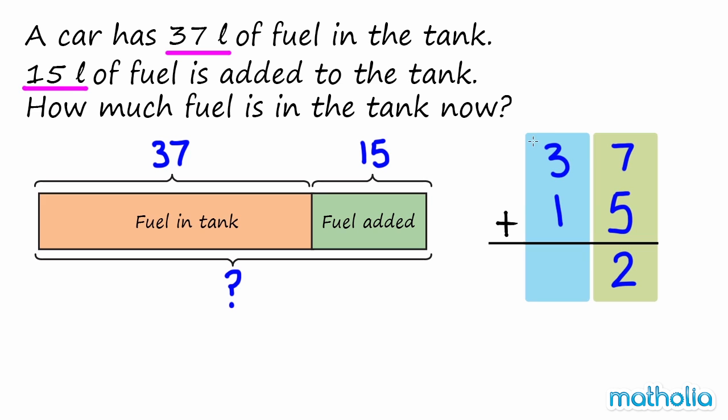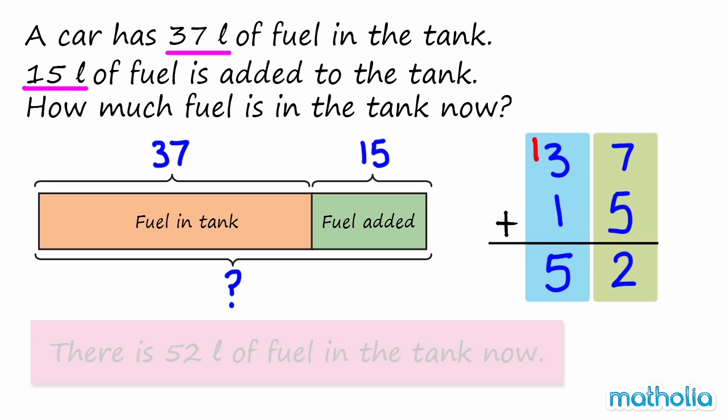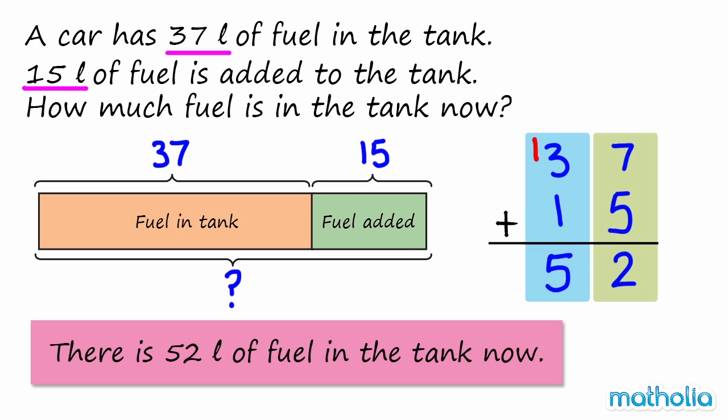37 plus 15 equals 52. So there is 52 litres of fuel in the tank now.